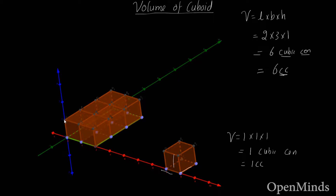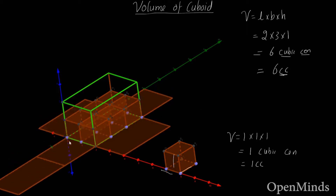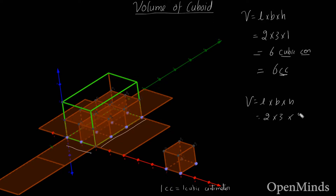Now let's increase the height of the box. The box becomes a little bigger. The length remains two, the breadth remains three, but the height is now increased to two. So the volume is L times B times H, which is two times three times two, giving us six times two, which is twelve.